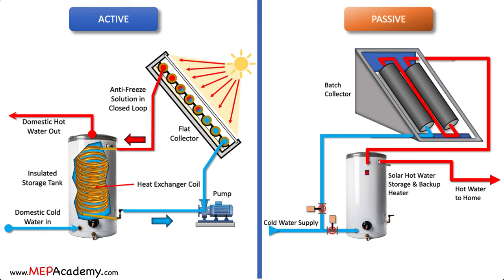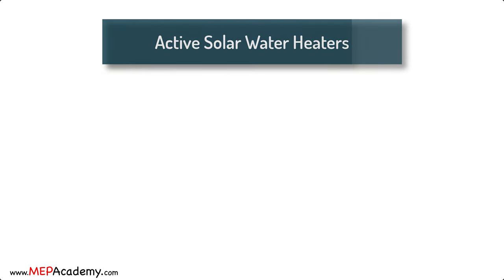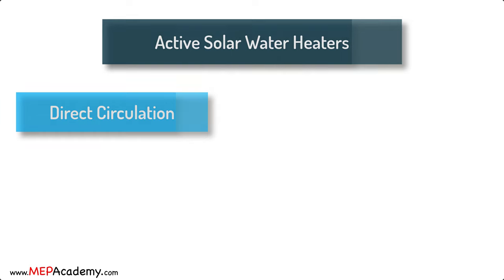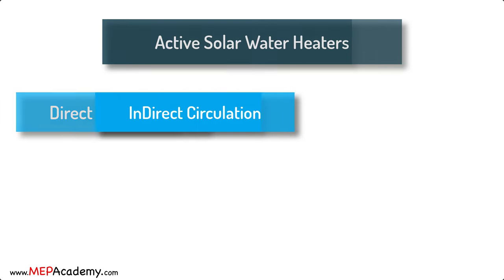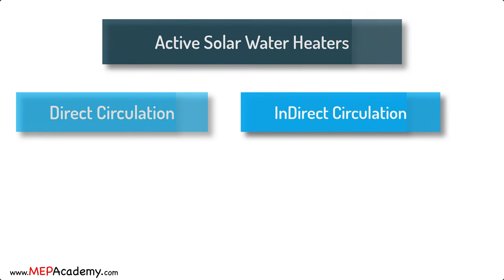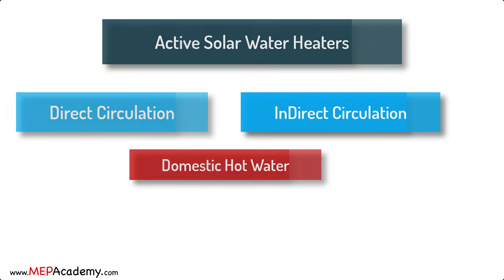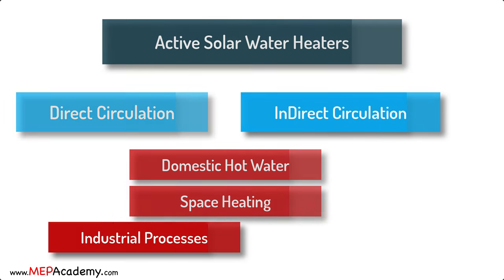Solar water heaters are described by the type of solar collector and circulation system that they use. Active solar water heaters come in two main types: direct circulation systems and indirect circulation systems. These systems harness solar energy to heat water for various applications such as domestic hot water, space heating, or industrial processes.